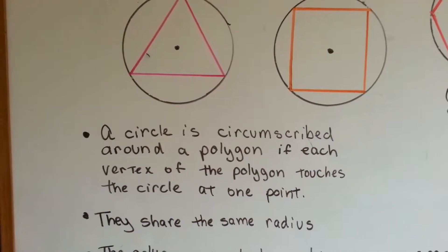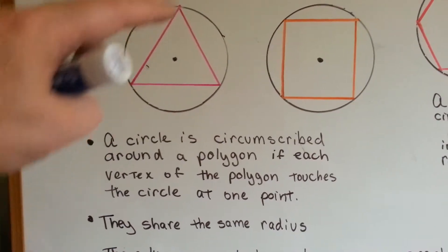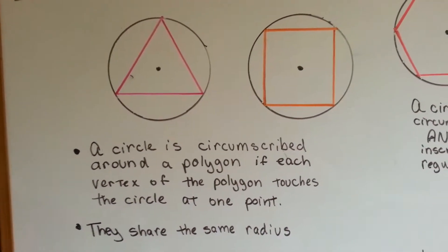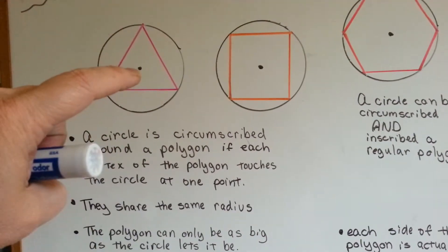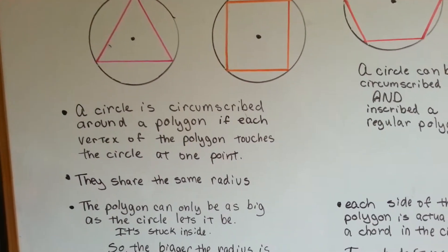A circle is circumscribed around a polygon if each vertex of the polygon touches the circle at one point. See how these all touch at one point? They share the same radius.